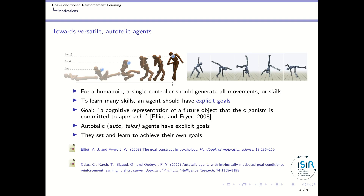To take another example, consider a humanoid. You may learn to perform this movement, or this one, or another one. But it would be a good idea to have a single controller that generates all the movements or skills that the humanoid should be able to display. So an agent should have explicit goals, because if it only has one goal, it cannot learn to do different things with that single goal.